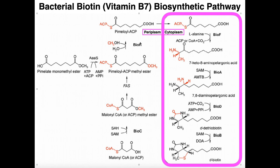When looking at bacterial pathways unique to bacteria like this one, instead of using fancy enzyme names like phosphofructokinase, you'll often use enzymes named after whatever you're biosynthesizing. Since we're synthesizing biotin, we see 'bio,' and then a letter based on the order of discovery. BioH just hydrolyzes off that methyl group, giving us pimeloyl-ACP.